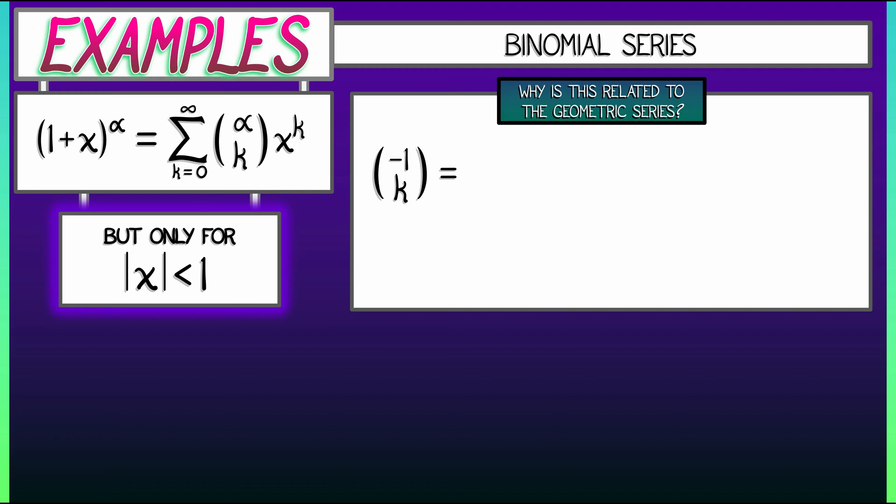Well, we've got that k factorial in the denominator. What do we have upstairs? We have negative 1 times negative 2 times negative 3. Keep going. K steps ending with negative 1 minus k plus 1. That negative 1 and the plus 1 cancel, and what we're left with is a whole bunch of minus signs, actually k of them, so that we have negative 1 to the k. Then upstairs, we have k factorial.